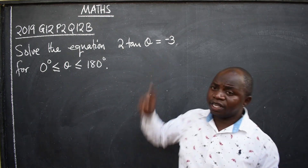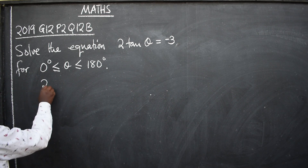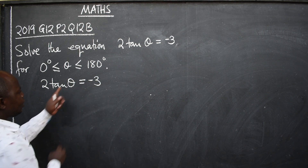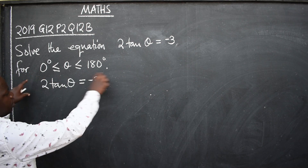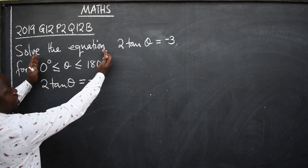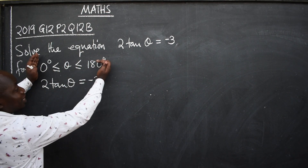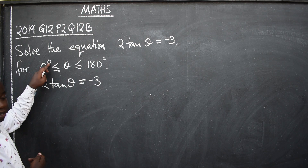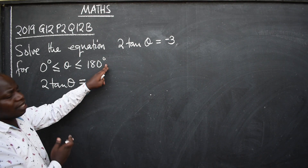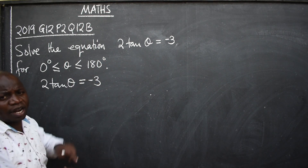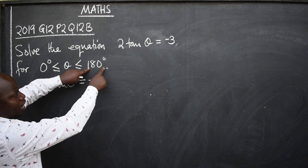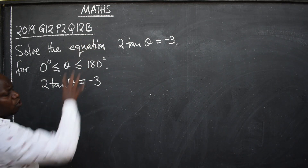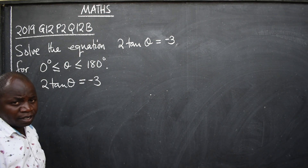Let's begin. This is the equation we have been asked to solve: 2 tan theta is equal to negative 3. We need to find the value of theta that will satisfy this equation within this range. The answer should be within this range — not negative, which is less than 0 degrees, and not more than 180 degrees. That is the meaning of the range. So make sure whenever you are given a trigonometric equation, you look at the range provided so that you are guided.